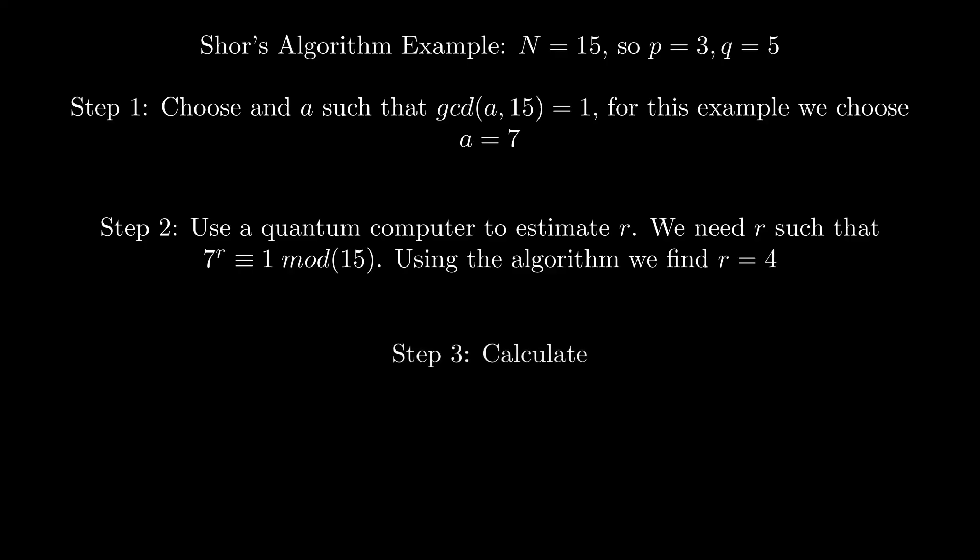Now we calculate the GCD of 7 to the power of 4 over 2 minus 1 and 15, and the GCD of 7 to the power of 4 over 2 plus 1 and 15. The first one becomes the GCD of 48 and 15, and the second becomes the GCD of 50 and 15. The GCD of 48 and 15 is 3, and the GCD of 50 and 15 is 5. As you can see, we have found the factors of 15, 3 and 5 using Shor's algorithm.